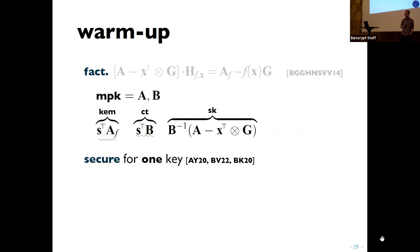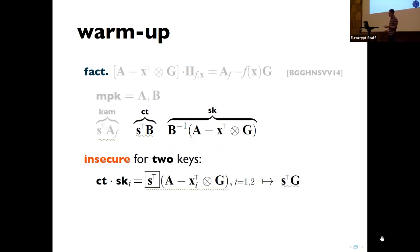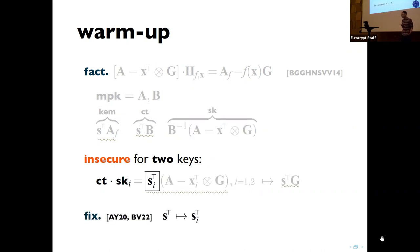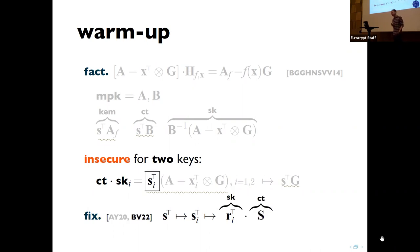Previous constructions get around this collusion attack by designing the scheme so that when you take the product of the ciphertext and the i-th secret key, you get a different LWE secret S_i. Concretely, in the Brakerski-Vaikuntanathan (BV) scheme, S_i is of the form R_i times matrix S, where R_i is an essentially random low-norm vector from the i-th secret key — a fresh R is picked each time — and S is the encryption randomness, a souped-up version of the LWE secret.